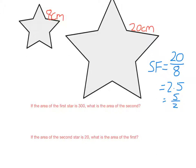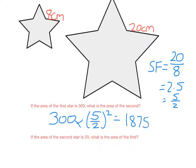So if I want to find the area of the second star, I take the area of the first star and multiply it by the scale factor squared. Putting that straight into the calculator gives 1875 — so if the area of the first star was 300 centimetres squared, the area of the second star is 1875 centimetres squared.